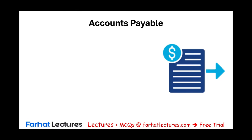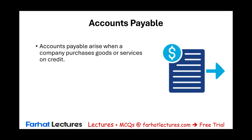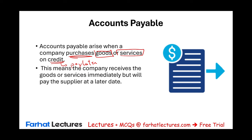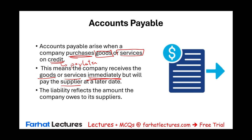Starting with accounts payable — it's one of the most common accounts that all companies have. Accounts payable arises when a company purchases goods or services on credit and will pay later. Companies buy goods and services and promise the seller to pay at a later date. As a result, accounts payable is created. The company receives the goods and services now but pays the supplier, vendor, or seller at a later date. The accounts payable balance reflects the total amount the company owes its suppliers — for example, $25,000.